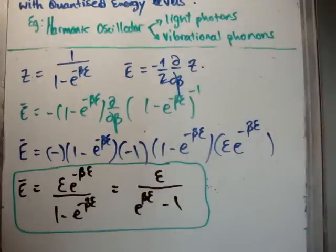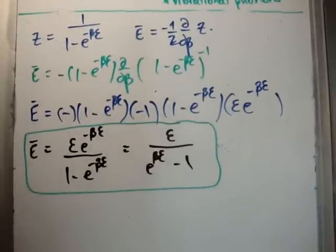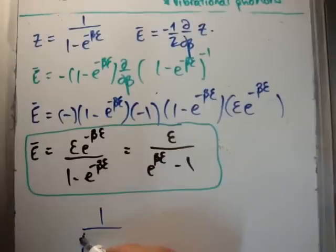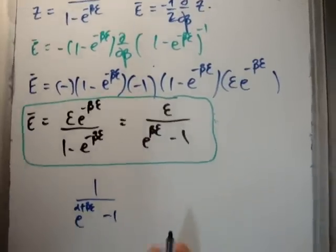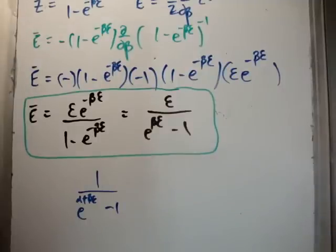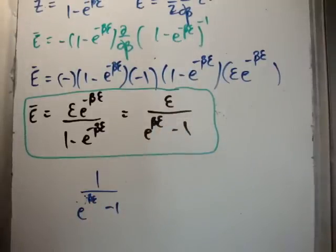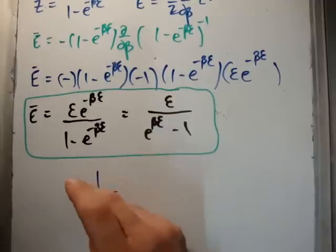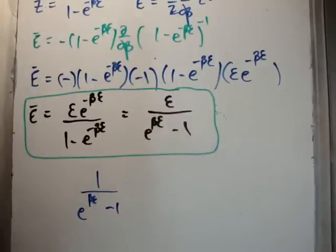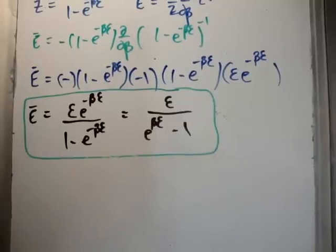This is the interesting part: the Bose-Einstein occupancy function is 1/(e^(α + βε) - 1). Our result is exactly this form. Because there is no limit on the number of photons or phonons, the chemical potential is zero, so α = 0, giving exactly ε/(e^(βε) - 1). This confirms that harmonic oscillators — vibrational phonons and photons — obey Bose-Einstein statistics and are bosons.